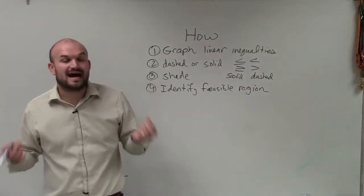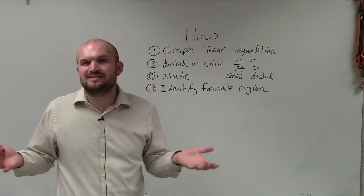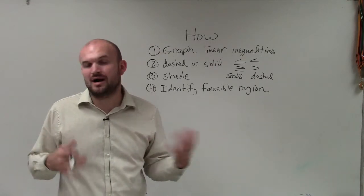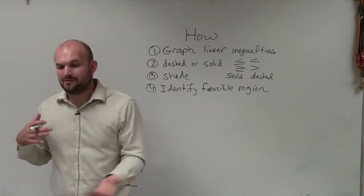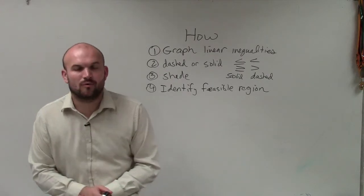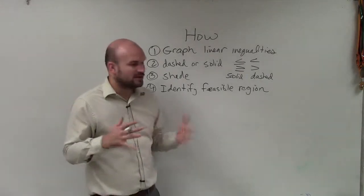You want to pick a point that is not on either of your linear inequalities but that is simple to plug in for x and y. The best one I always default to is (0, 0). If a line goes through (0, 0), then I would pick (1, 1), (1, 0), or (0, 1). Either one of those points will work.